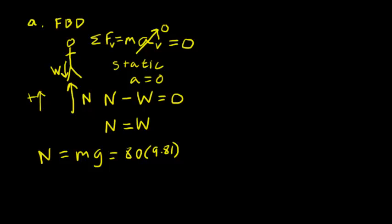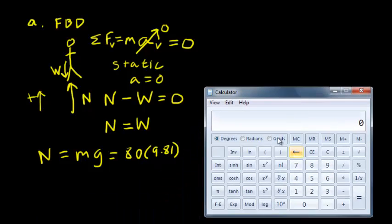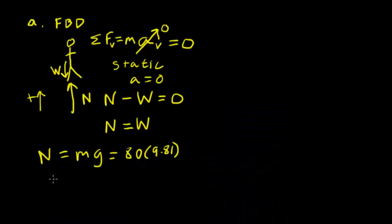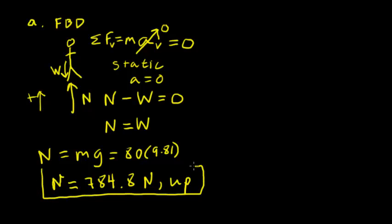And I can go to my calculator. I'll bring that in here. And I would multiply 80. So my normal force is equal to 784.8 newtons. And the question says to give magnitude and direction. So we found the magnitude, and because we drew this in as an upward force, and the number came out positive, I would just say that that is an upward force. So that is our answer for part A.